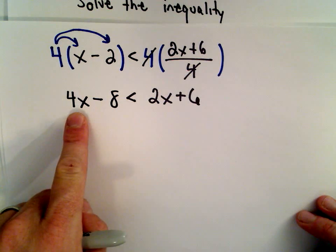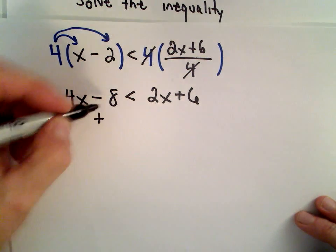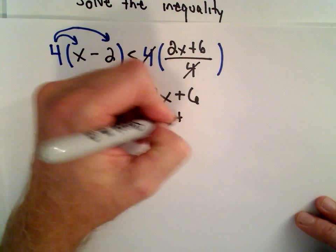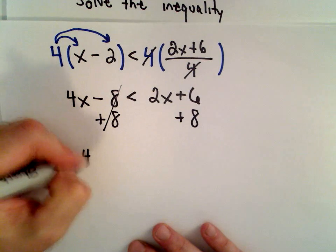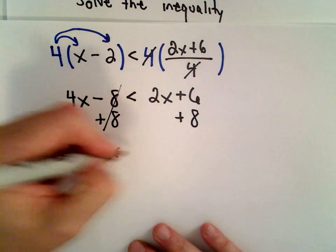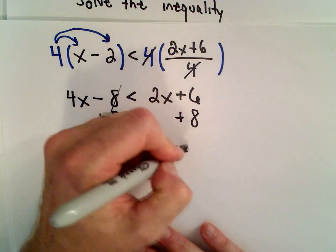So if I want to keep the x's on the left, that means I'm going to move this constant over. Since I'm subtracting 8, I'm going to add 8 to both sides. I'll be left with 4x on the left side, that'll be less than 2x plus 14.